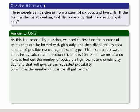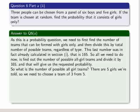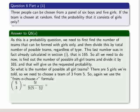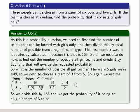So what is the number of possible all-girl teams? Well, there's 5 girls, we're told. We need to choose a team of 3. So that's 3 from 5. So again, we choose the n choose r formula, which is where n equals 5 this time and r equals 3. We expand into factorials and we see that that simplifies to 10. So we divide this by 165 and we get the probability of it being an all-girls team of 3 to be 10 over 165, which is 2 over 33, which is 0.06. And that's the answer to this part.